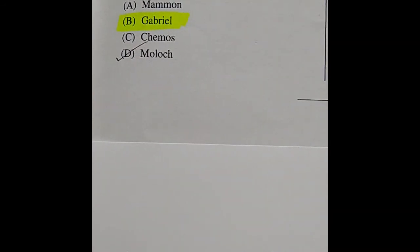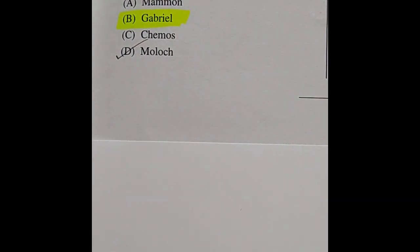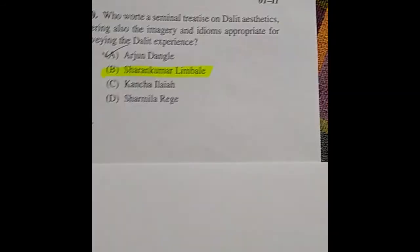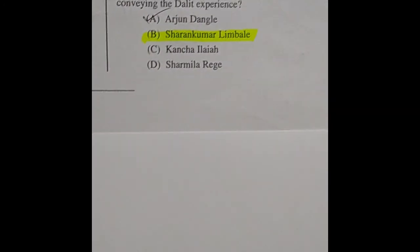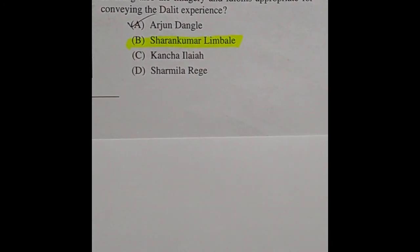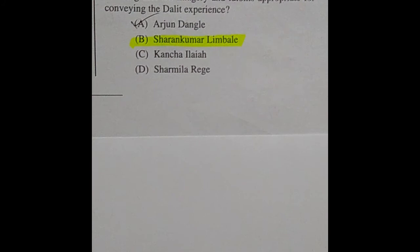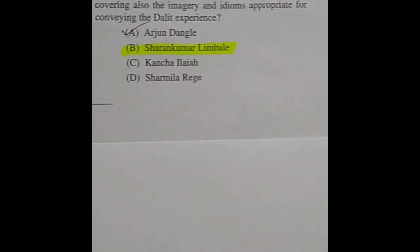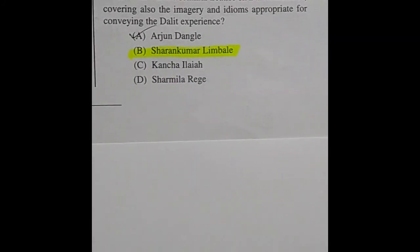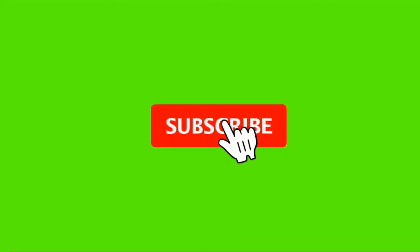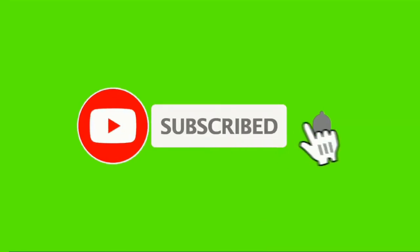Question 99: Which of the following characters has no mention in Milton's Paradise Lost, Book 1? The right answer is option B: Gabriel. Question 100: Who wrote a seminal treatise on Dalit aesthetics covering also the imagery and idioms appropriate for conveying the Dalit experience? The right answer is option B: Sharankumar Limbale.